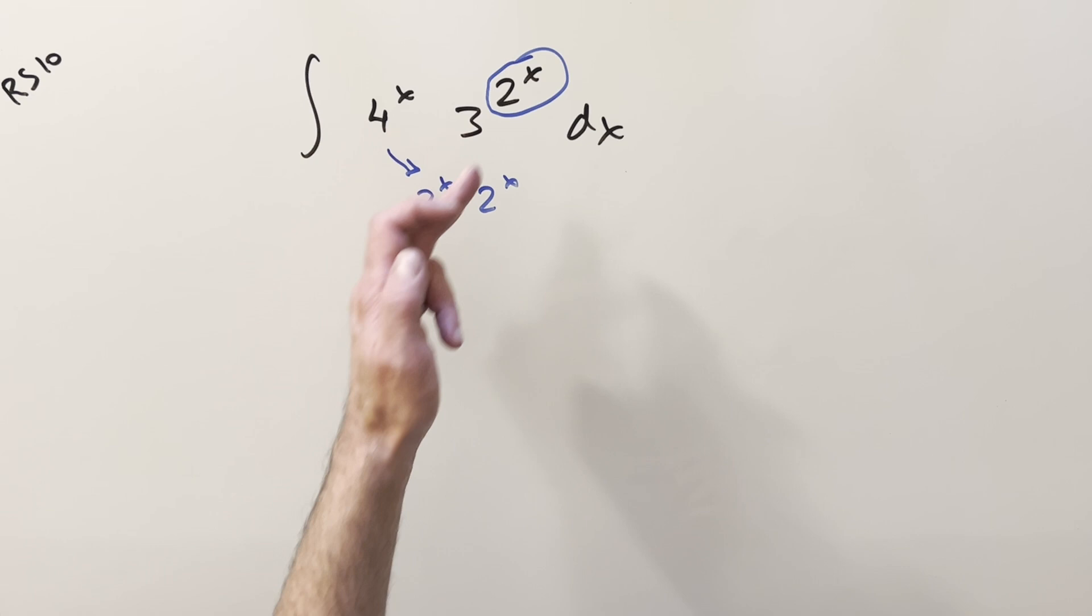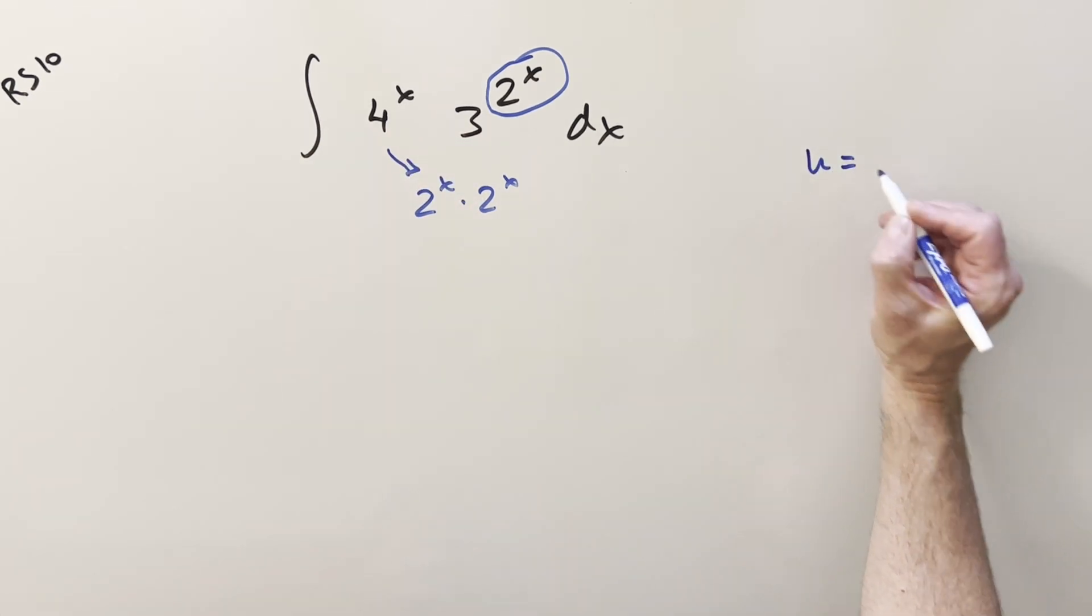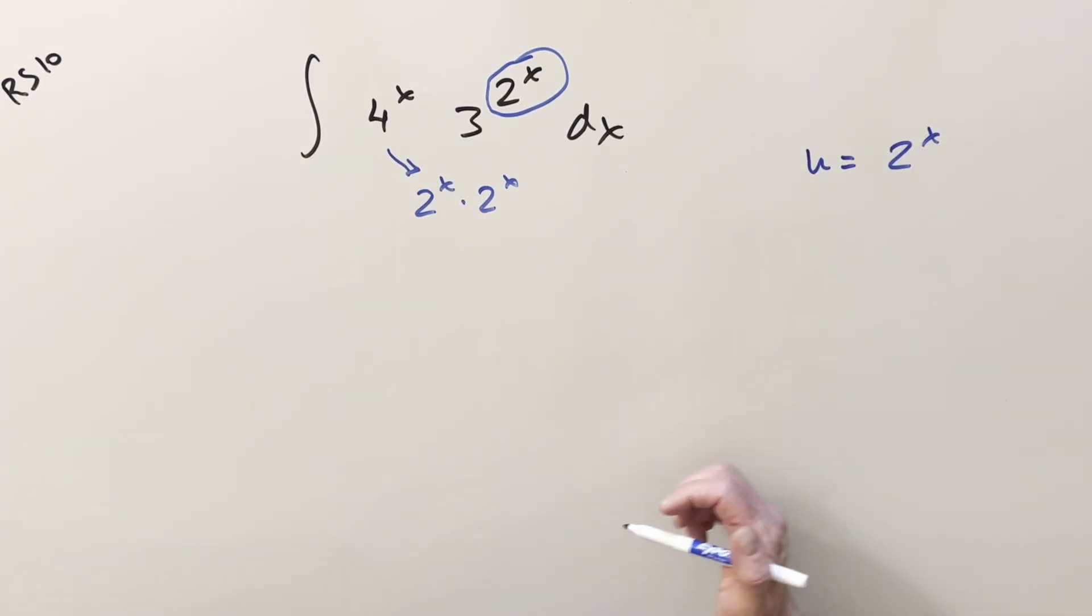I'm thinking a u substitution could help clean this up a little bit. So if I set u equal to 2x, before I take a derivative, let's write it the other way. When we have a constant like 2, I can always write this as e ln 2.